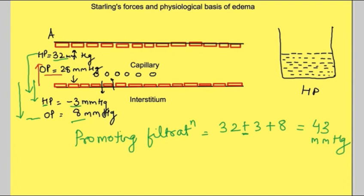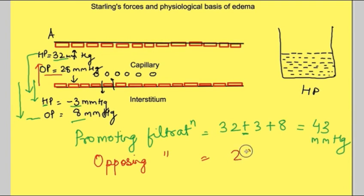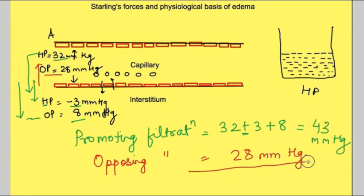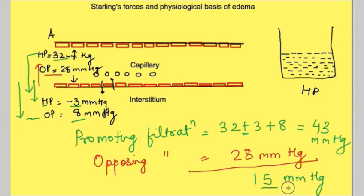There is only one force opposing filtration from the capillaries: the osmotic pressure of the capillaries, which is 28 mmHg. So the net driving force for water is 43 minus 28 = 15 mmHg, causing movement of water away from the capillaries at the arterial end.